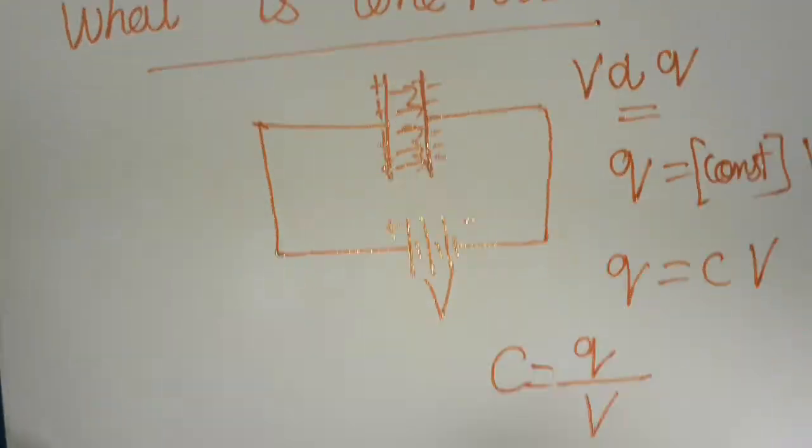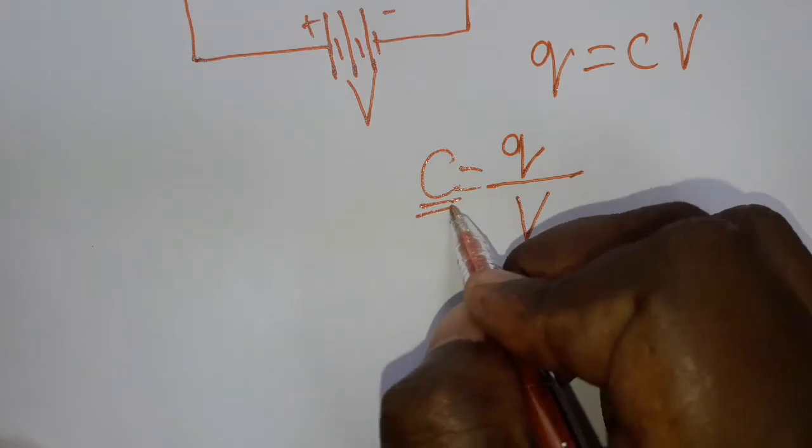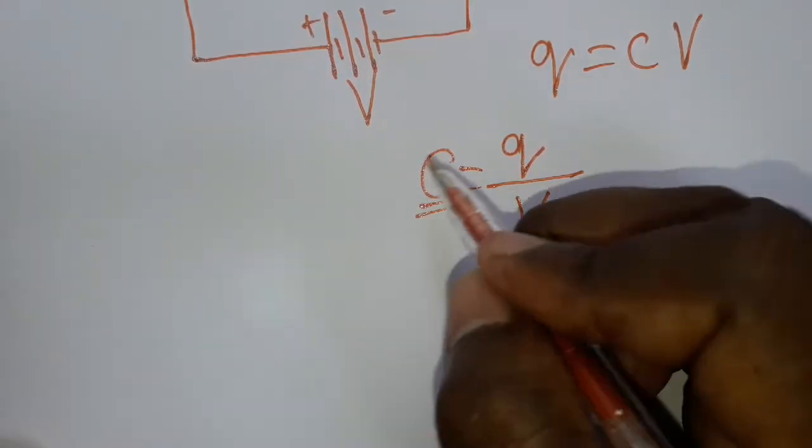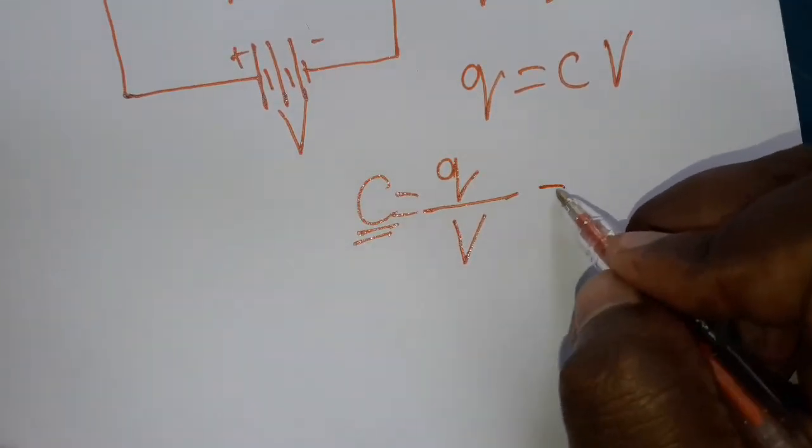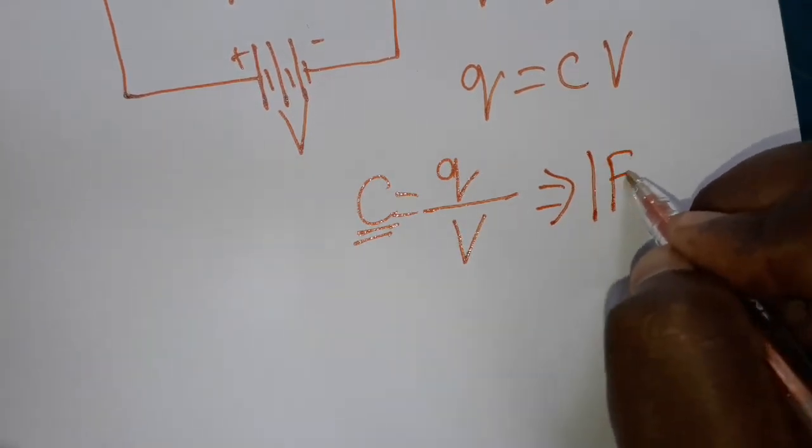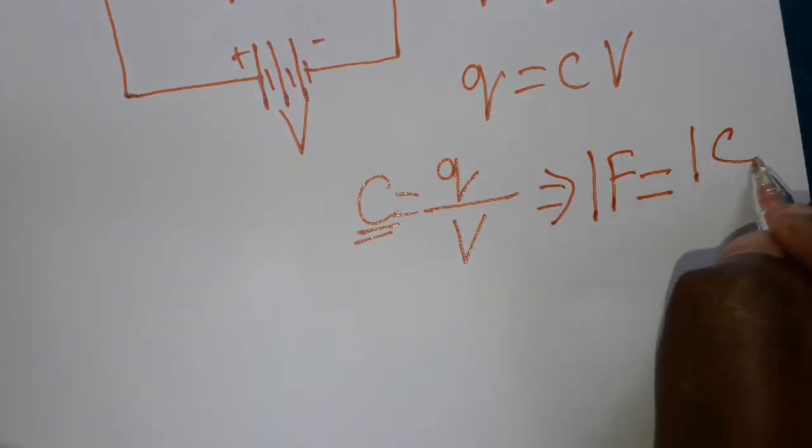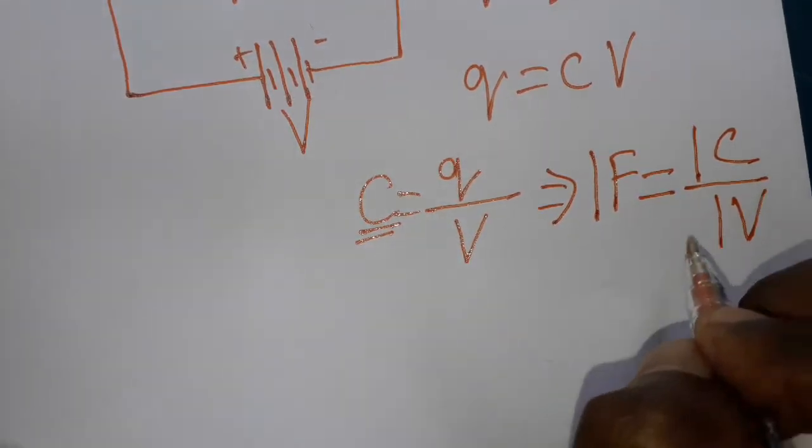Farad is a scientist's name. The capacitance of a capacitor is measured in farads. One farad is equal to one coulomb per volt.